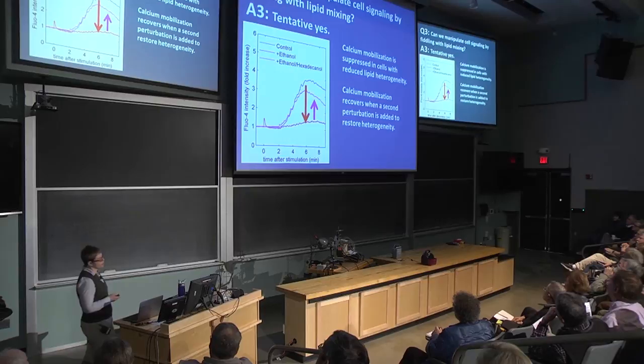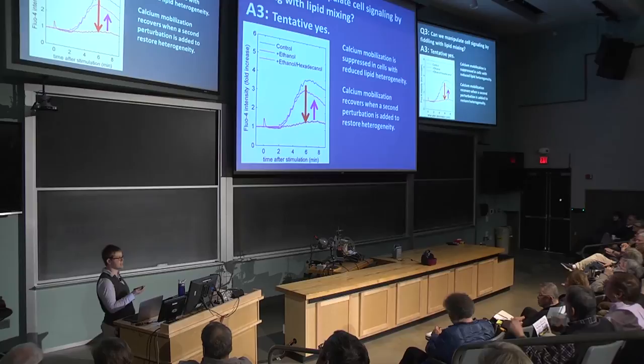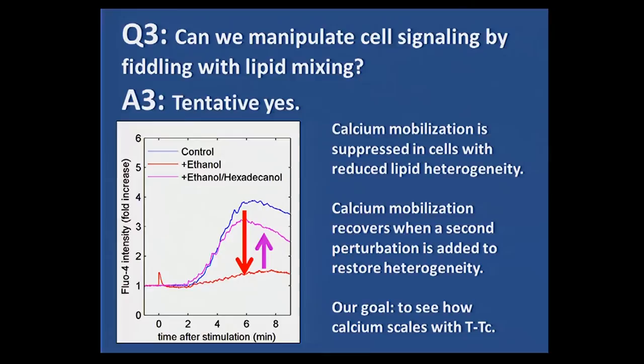Here's a quantification: when we add ethanol, we suppress the calcium response dramatically. But when you add ethanol in combination with another compound that raises transition temperatures back up — restoring the same level of fluctuations — we see the signal come back again. This is nice to have as a control because maybe ethanol is doing something specific to one of these proteins. The control of adding the other compound and reversing it tells us that it's not a specific contribution of just adding ethanol. Our dream is to make a scaling plot of functional response versus how far you are from the critical point, to show this is not just a nice coincidence but explainable by these theories.